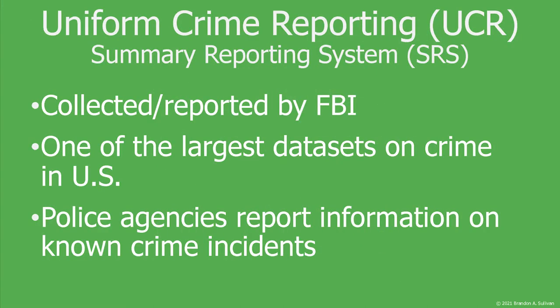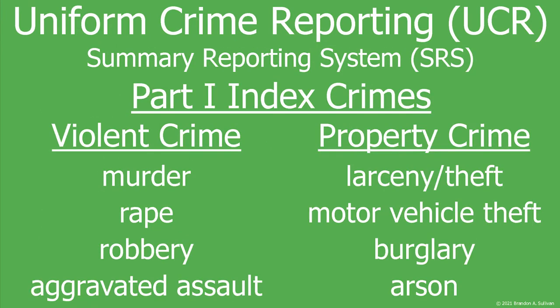The first and most common measure used are official records of crimes known to the police. The most prominent is the FBI's Uniform Crime Reporting program. The UCR collects monthly and reports annually aggregate data from law enforcement agencies across the United States. The UCR's traditional summary reporting system includes eight types of crime, known as Part 1 Index Crimes.